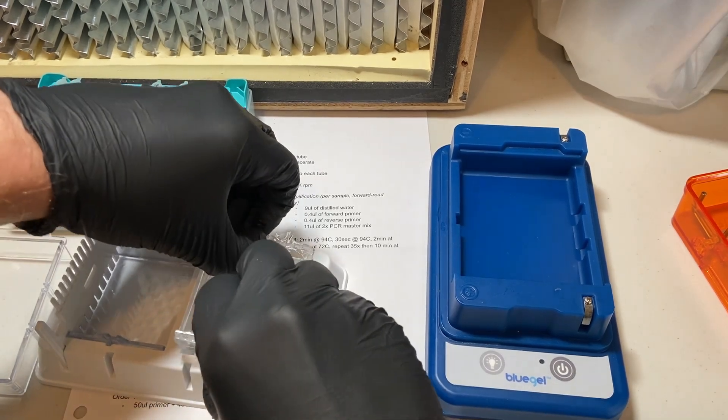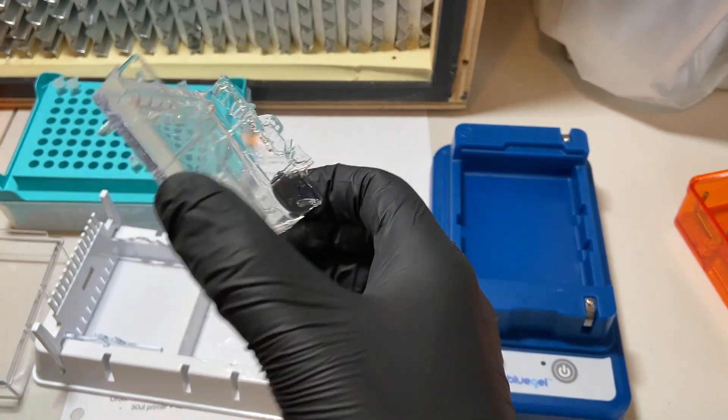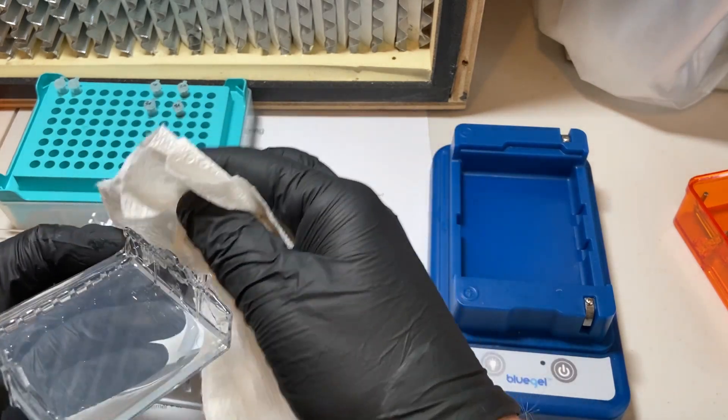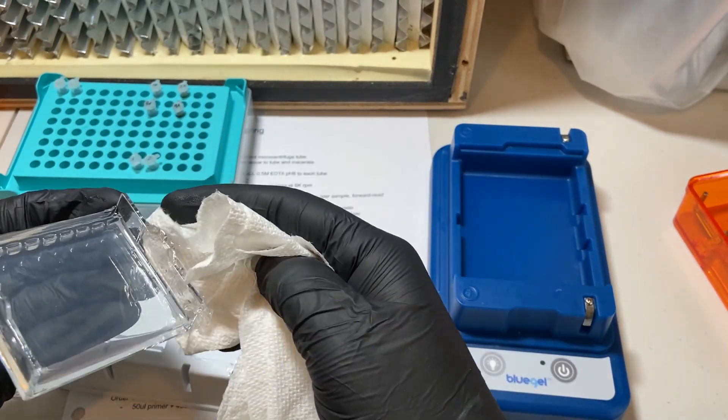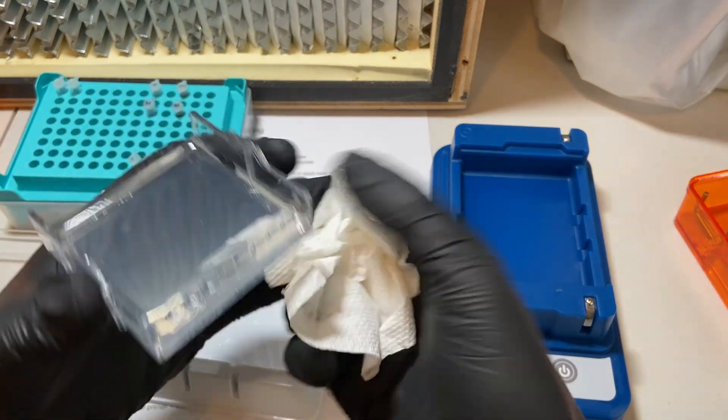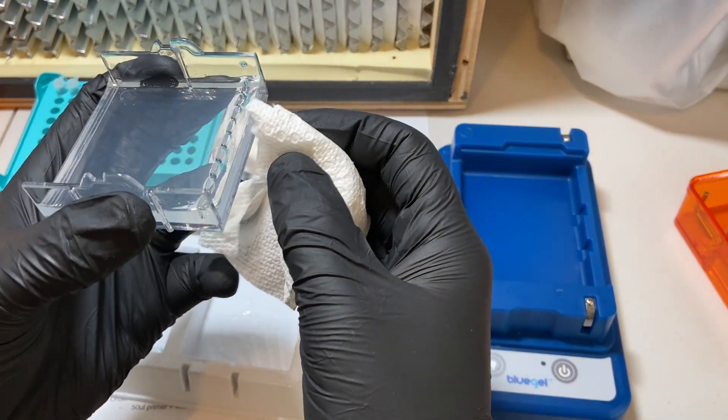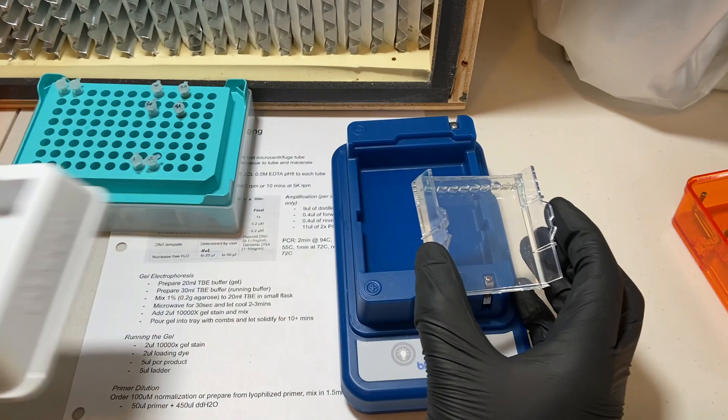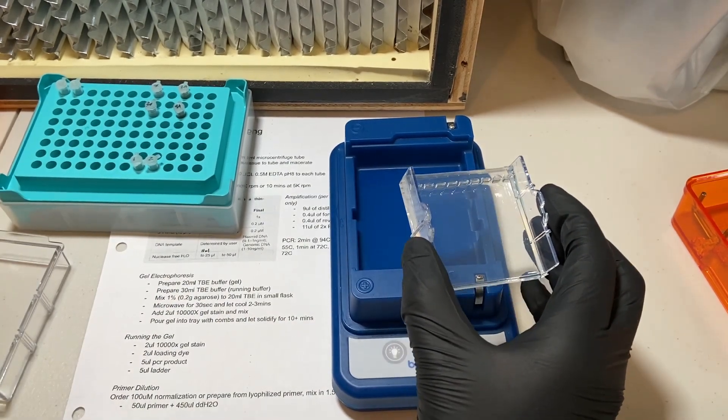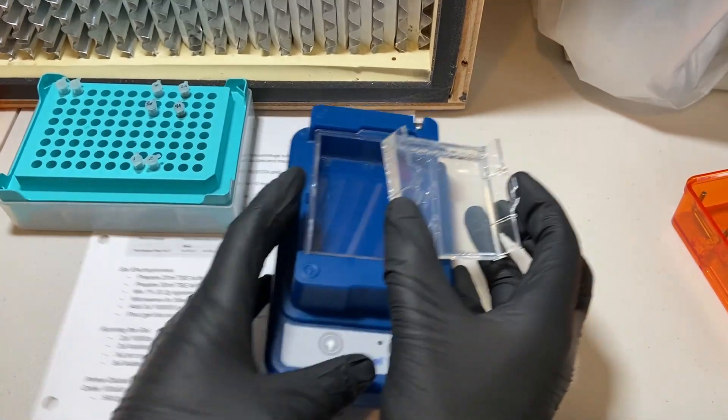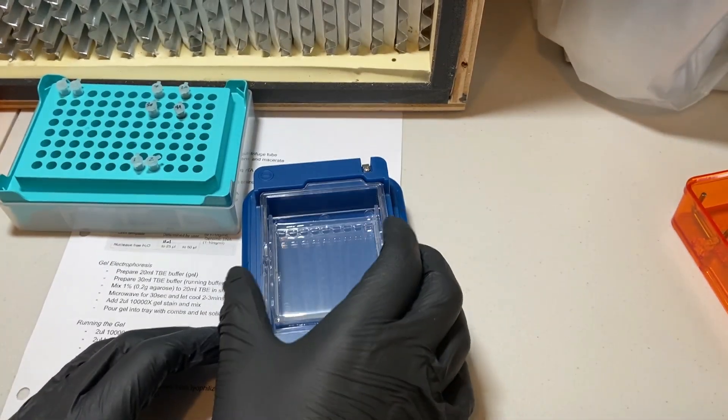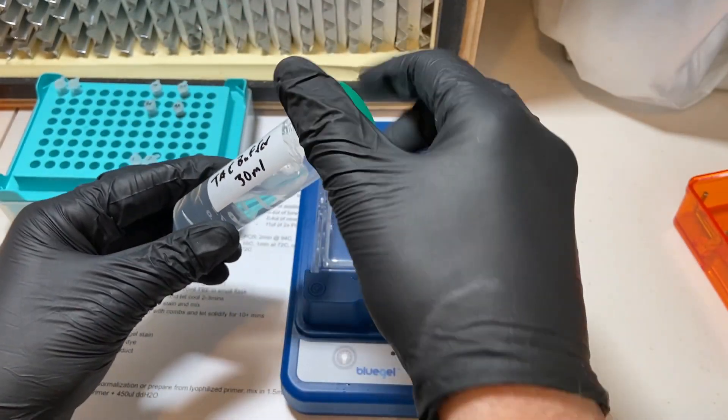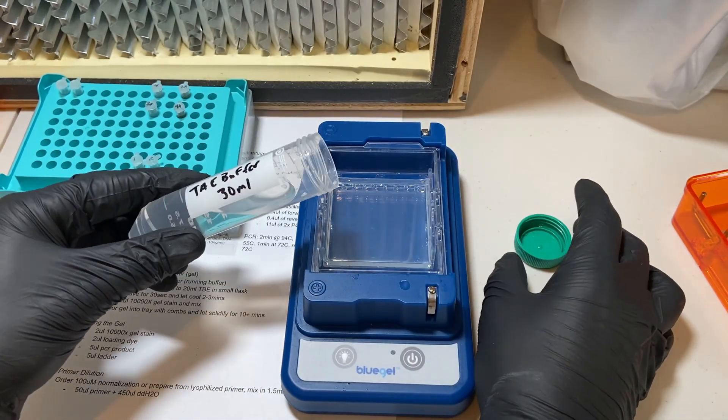Next, we're going to go ahead and remove the gel from the form. And you'll notice that in this case, there's quite a bit of excess around the gel itself. So just take a paper towel and wipe off all of the excess from around the edges. Be gentle with it so that you don't tear or break the gel in any way. I'm using a blue gel system here, but you could use really any electrophoresis system. This one's somewhat nice and affordable. It has some limitations like fixed voltage, but it works just fine for DNA barcoding.